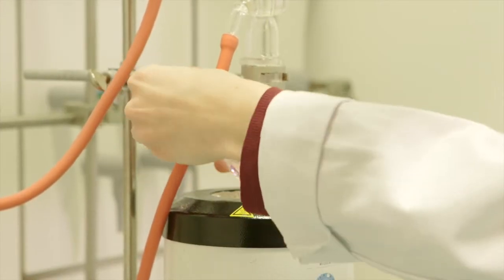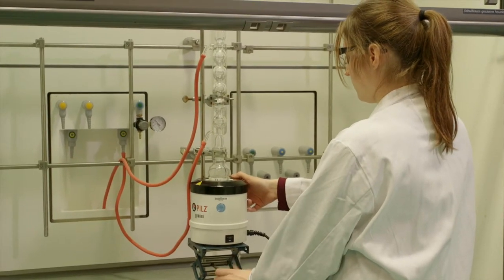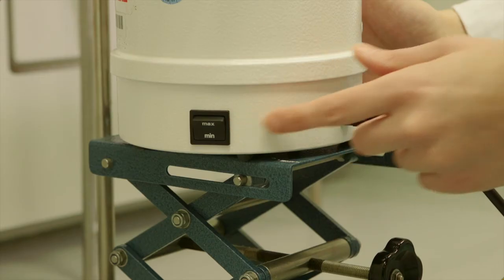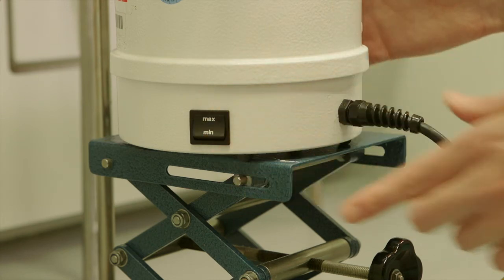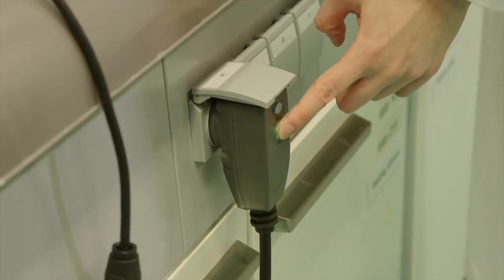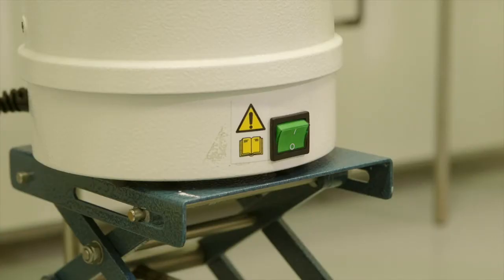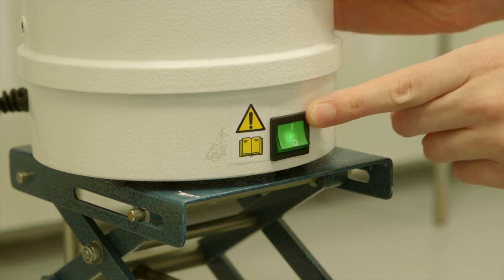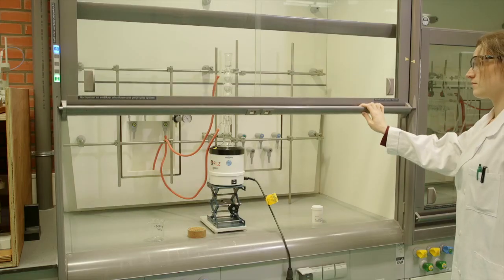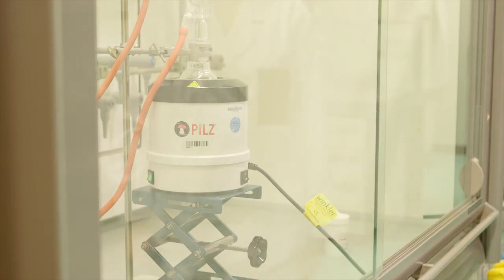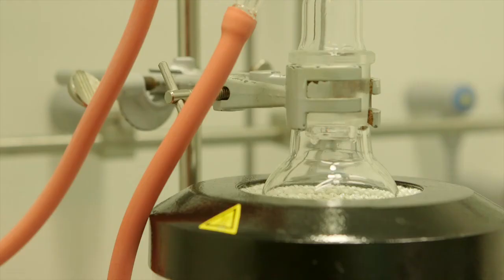When everything is attached again, adjust the settings of the isomantle. Adjust the setting to minimum for gentle heating and to maximum for fast heating. Press the green button on the plug and turn on the green button on the isomantle. Your reaction will be heated now. The process in which the first vapor condenses and runs back into the flask is called reflux. Start timing from that time point.